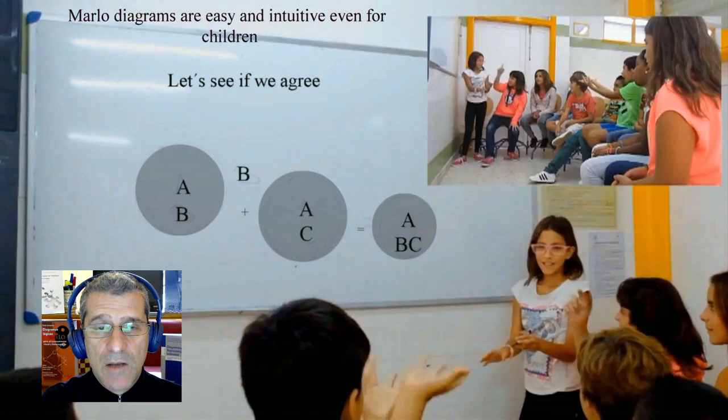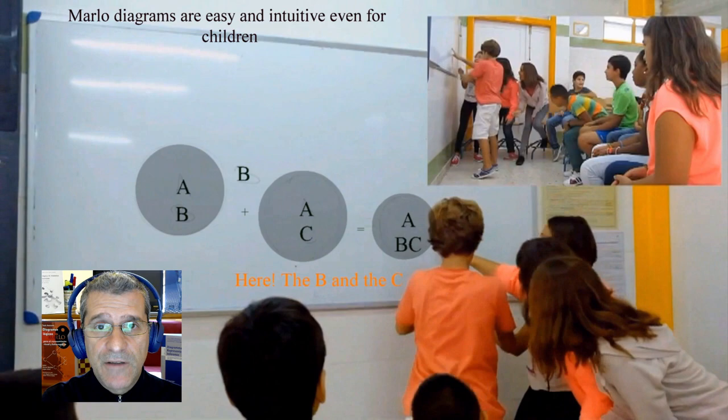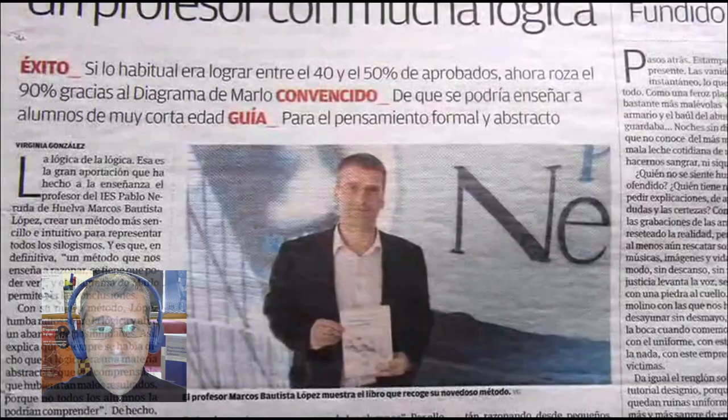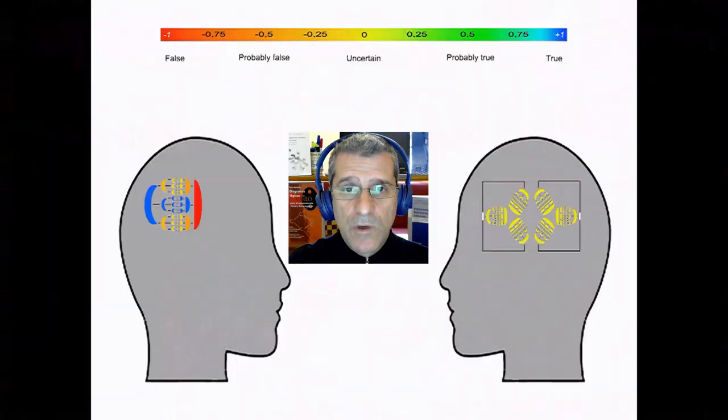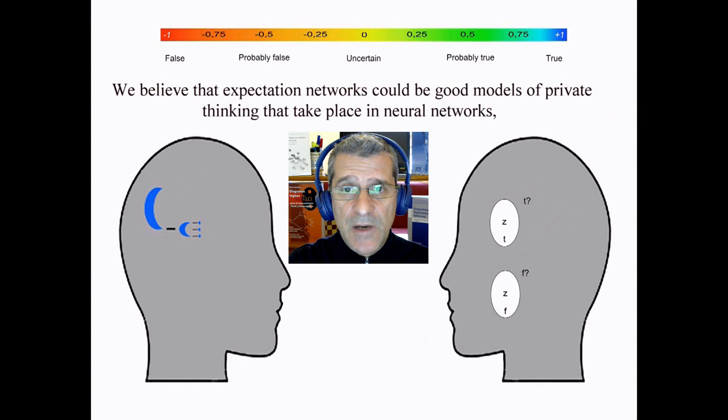The diagram is being used successfully as a tool to teach propositional calculus in high school. We believe that expectation networks could be good models of private thinking that take place in neural networks, while Marlowe's diagrams represent the way we communicate our propositions through language.